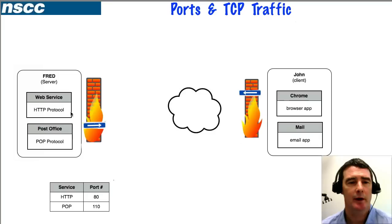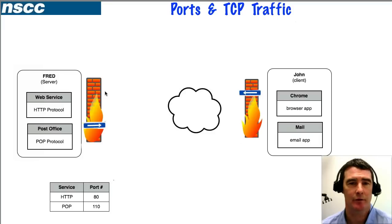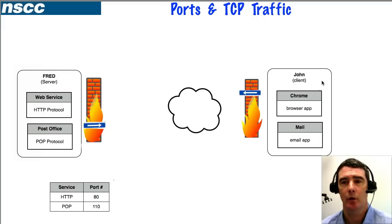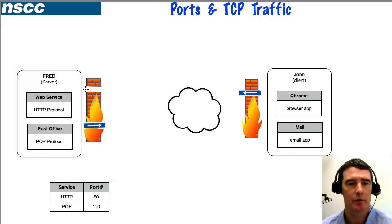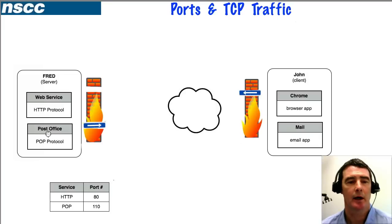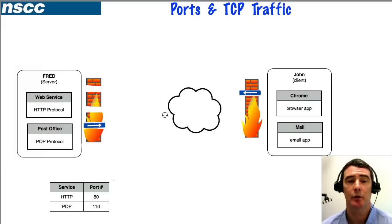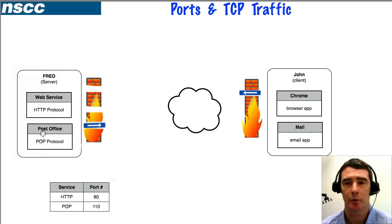When you set up a service like a web service on a server, you need to make sure that incoming traffic is allowed through the firewall. A web service opens up ports or holes through the firewall — port 80 for HTTP and port 110 for POP. You may need to do this manually, but often when you install these services they open those ports automatically.